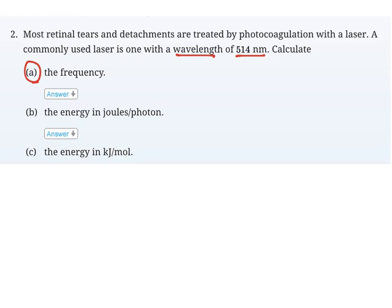So I have an equation that's on my formula sheet, and it's C, which is the speed of light, equals lambda, which is wavelength, times the symbol nu, which is the frequency.